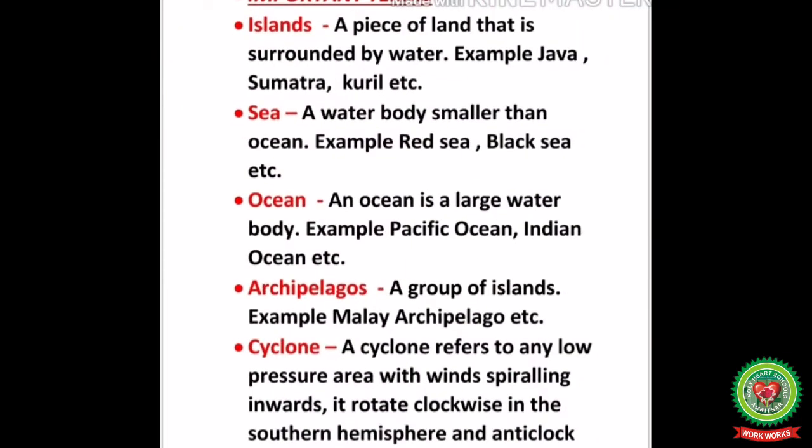Before we start the topic, let's discuss the important terms. Number one: island — a piece of land that is surrounded by water; examples are Java, Sumatra, Coral, etc. Number two: sea — a water body smaller than an ocean; examples are the Red Sea and Black Sea. Number three: ocean — a large water body; examples are the Pacific Ocean and Indian Ocean. Number four: archipelago — a group of islands; example the Malaya Archipelago.